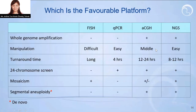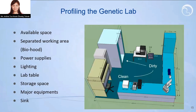The answer to the goal question will drive you to choose the most adequate platform. For example, if you want to do mosaic calling, a platform with high resolution is more appropriate. Today, NGS is the most prevalent platform because of easier manipulation, flexible turnaround time, and robust ability for copy number identification. In the next stage, I will share our experience for lab and instrument design based on the NGS platform.